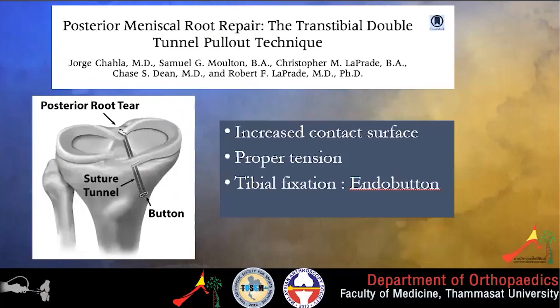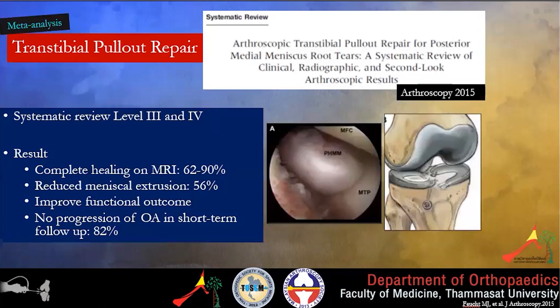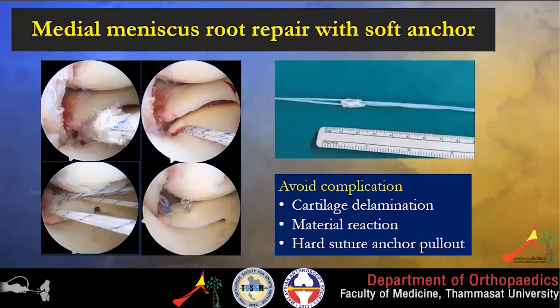Disadvantages of transtibial repair include the requirement for a bone tunnel, risk of tunnel convergence, risk of neurovascular injury, and bungee cord effect. Chalai et al. in 2016 proposed a posteromedial root repair with a double-tunnel pull-out technique to increase contact surface at the root, using tibial fixation with an endobutton. In a systematic review in 2015, transtibial pull-out repair showed complete healing on MRI ranging from 60 to 90%, extrusion reduction of approximately 56%, improved functional outcome in short-term follow-up, and no progression of osteoarthritis.